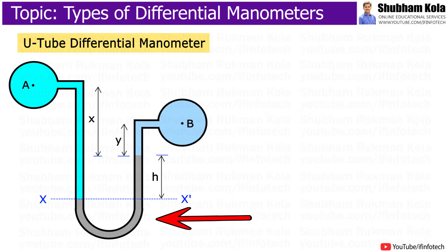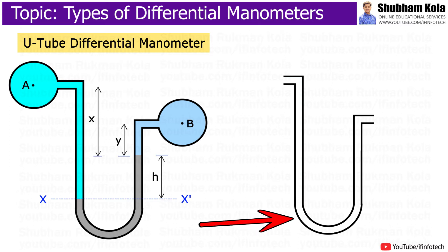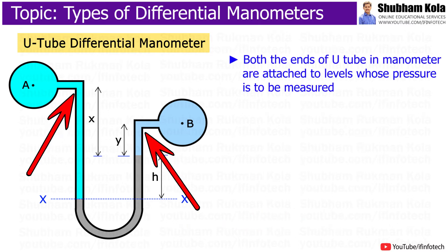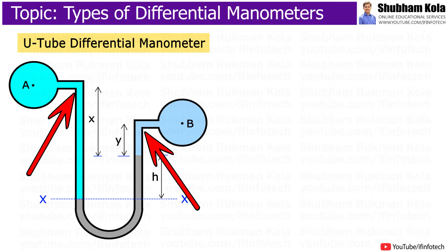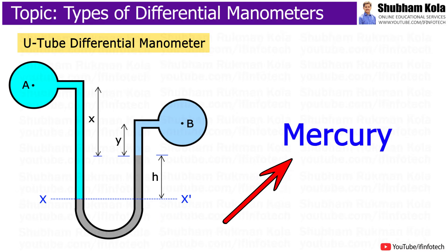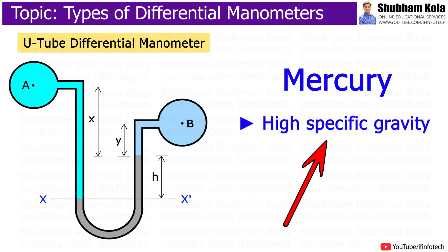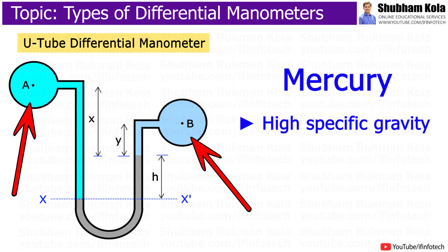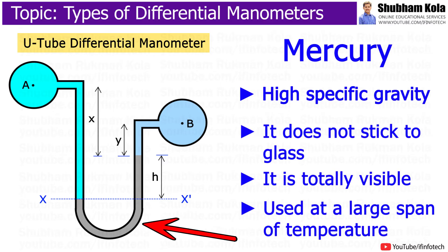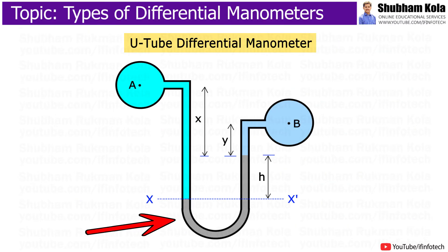The U-tube differential manometer encloses a glass duct bent into a U-shape. Both ends of the U-tube manometer are attached to the points whose pressure is to be measured. In the U-tube differential manometer, mercury is used as the manometric fluid, which has higher specific gravity than the fluid present in the pipes, does not stick to glass, is totally visible, and can be used at a large span of temperature. There are two cases in the U-tube differential manometer.